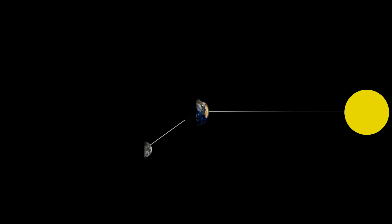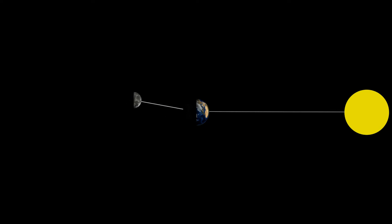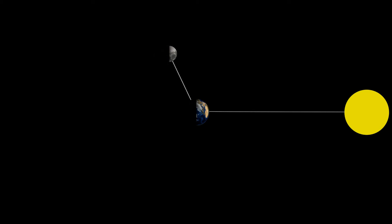The moon continues to grow as we go into full moon. The moon is opposite of the Sun with the Earth in the middle — at this point we can now see all of the illuminated part of the moon. As we head towards third quarter, we see less of the moon; it starts to get smaller, and we call this waning. Third quarter is another 90-degree relationship, so we're going to see a quarter of the moon — just the opposite quarter of first quarter.